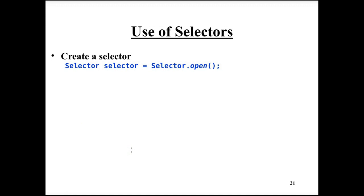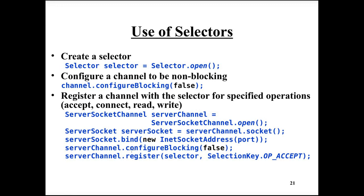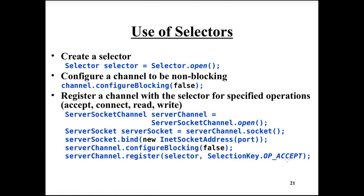To use the selector, create it by calling selector.open, then configure the channel to be non-blocking by calling configureBlocking(false). Then register the channel with the selector. The server socket channel has its socket bound to a particular port, meaning it is listening for incoming connection requests. Rather than calling accept immediately — which would block — we configure the channel to be non-blocking and register the selector with the channel by calling the register method, specifying the selector and the accept operation of interest.